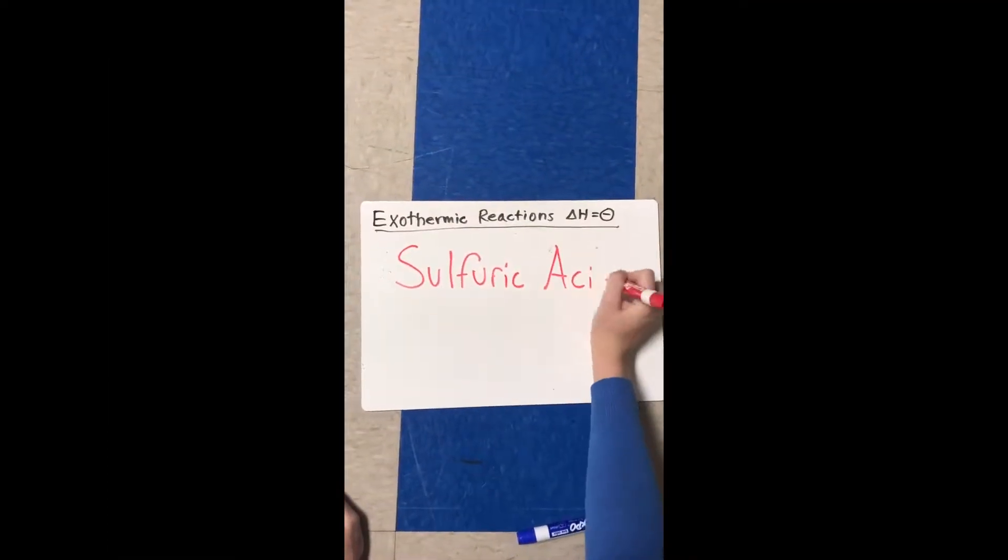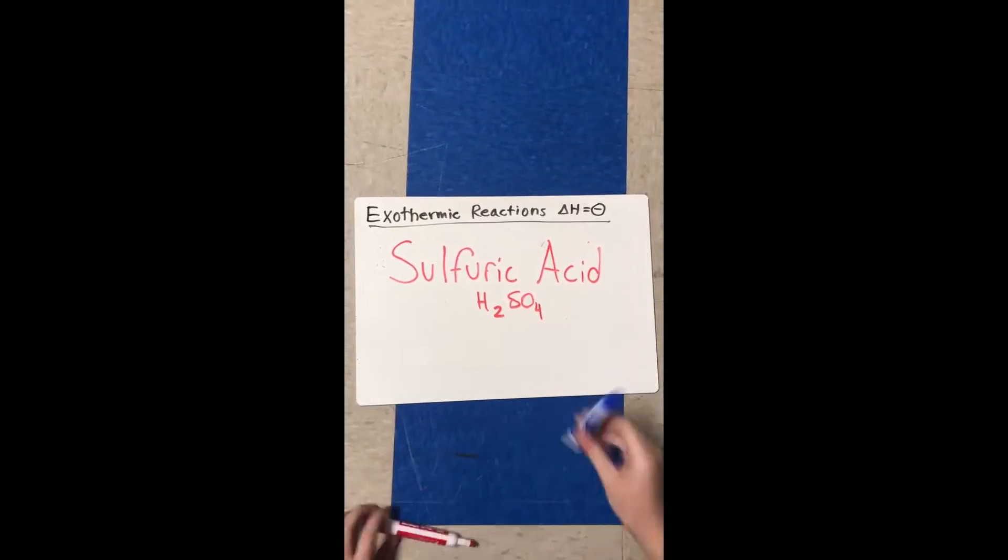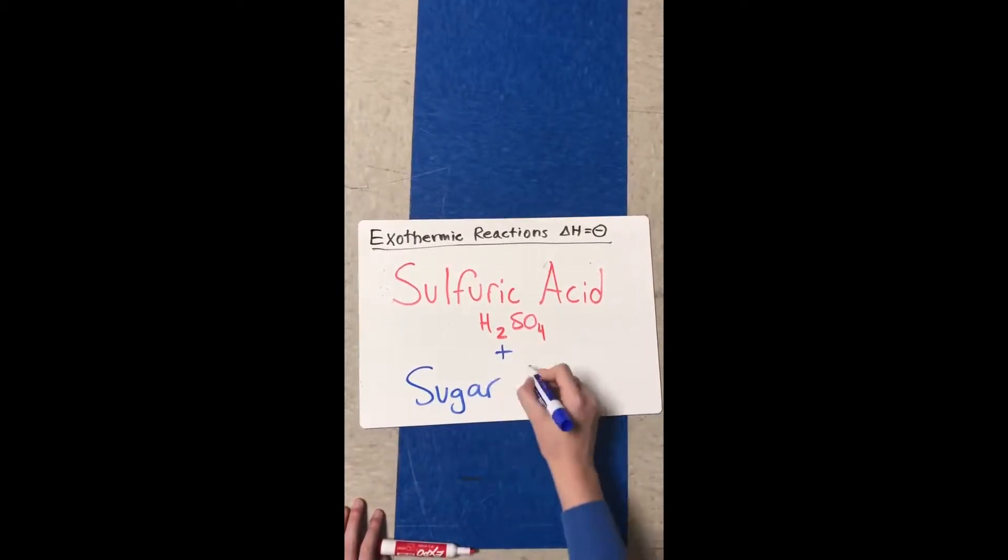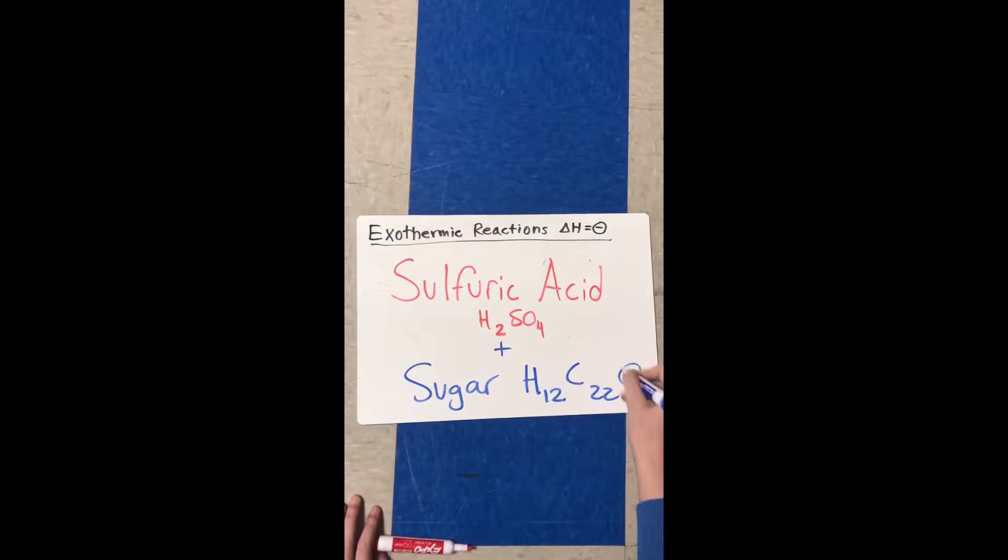Our experiment will consist of mixing sulfuric acid, which has a formula of H2SO4, with sugar, which has a formula of C12H22O11.